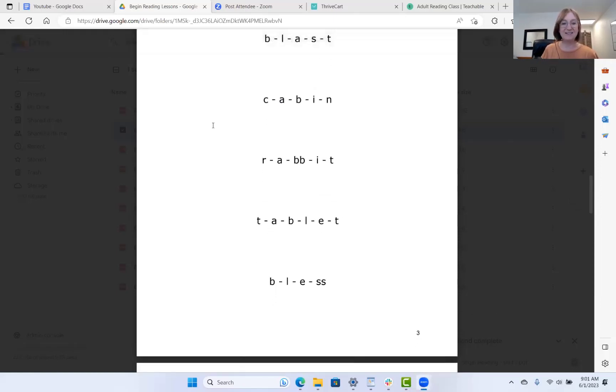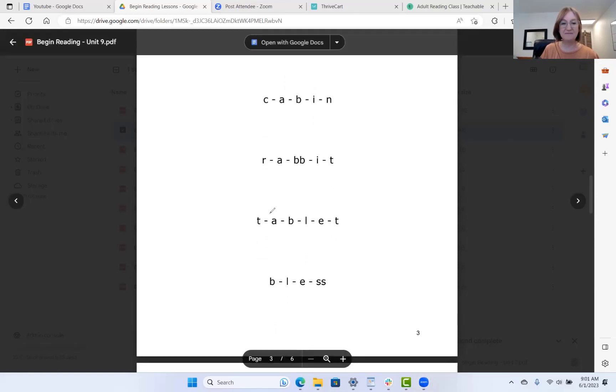Let's do the next one. Okay, so here this a is going to say a because the next two letters are consonants. This e is going to say e because there is a consonant and a space after it. Okay, so here we are. The sounds are t, a, b, l, e, t. When you combine those sounds, we have tablet, tablet, tablet. Beautiful.